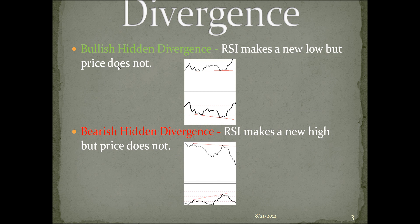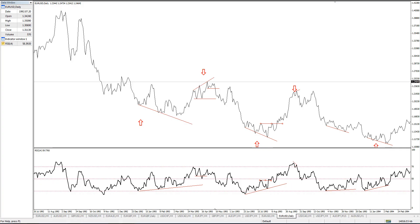Bullish hidden divergence is when the RSI makes a new low but price does not. So here we kind of have a double bottom, just a sideways move, and the RSI made a new low. Then bearish hidden divergence is when the RSI makes a new high but price does not — a lower close in price. This is called hidden divergence because a lot of people don't pay attention to it. They only look for regular bullish or bearish divergence and don't look for the hidden divergence.